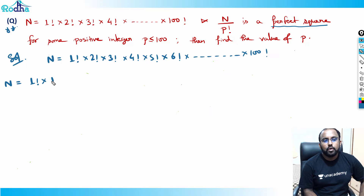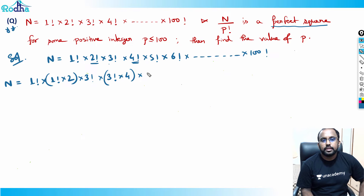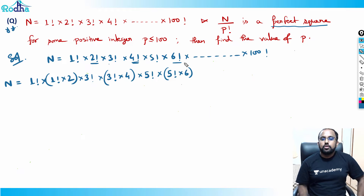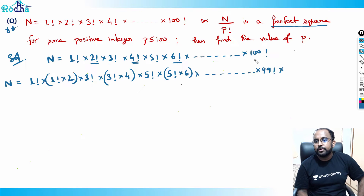Now, 2 factorial can be written as 1 factorial into 2. Similarly, 4 factorial can be written as 3 factorial into 4. We leave 3 factorial as it is. Then 5 factorial we leave as it is, 6 factorial can be written as 5 factorial into 6. This pattern continues till 100 factorial, where 99 factorial would be left out and 100 factorial is written as 99 factorial into 100.